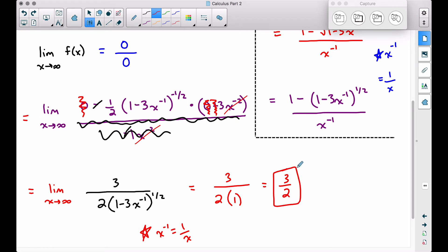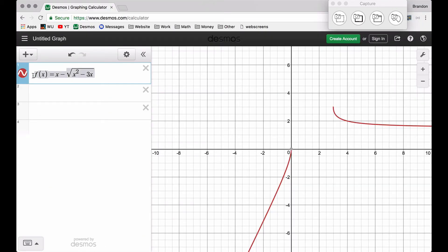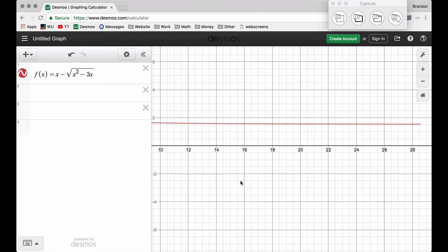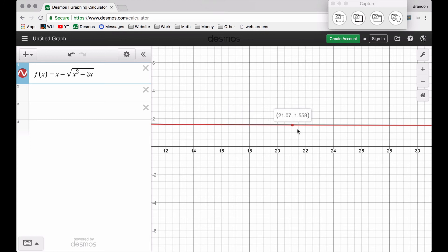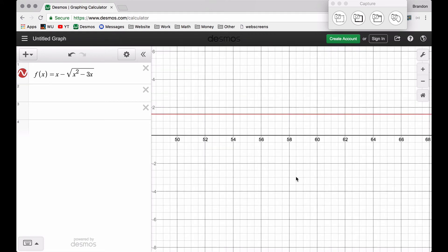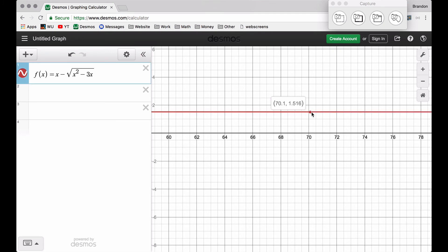Let's verify this over in Desmos. So we have that same function, f(x) here. And earlier, we were letting x get really big. We said our limit was 3 halves, and 3 halves is 3 over 2, which is 1.5. 3 divided by 2 is 1.5. I'm going to keep on dragging along here, and I'm going to let x get really big. We're out here around 70. And look at the value of y. As x is getting bigger, that value of y is around 1.5.